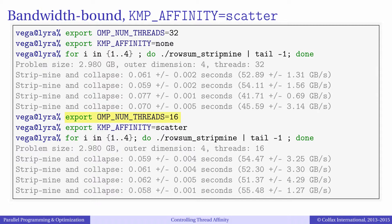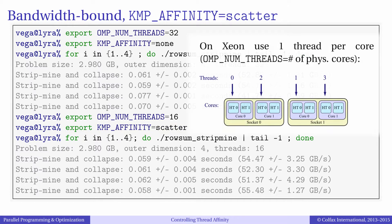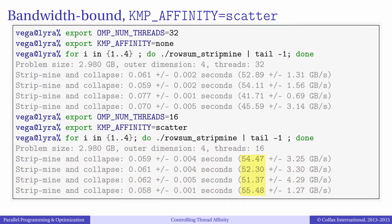After that, we set the number of threads to 16, meaning one thread per core, and set affinity to type scatter, which spreads threads evenly across 16 cores in the two CPU sockets. As we can see, performance results are more uniform and also high, in the range from 52 to 55 gigabytes per second.